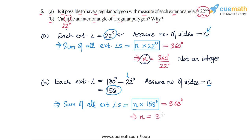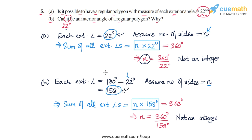So N = 360 degrees divided by 158 degrees. Once again, this gives us a value of N that is not an integer. This means we cannot have 158 degrees as the exterior angle, and in other words, we cannot have 22 degrees as the interior angle of a regular polygon.